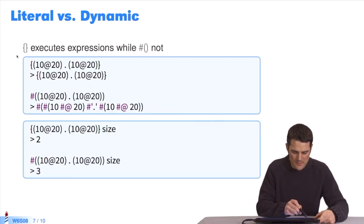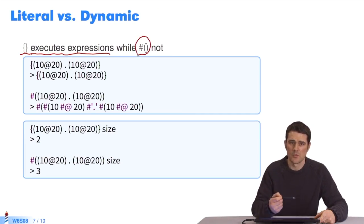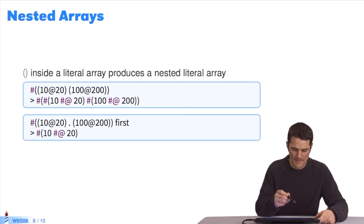So the important difference is right here. When I use braces, it executes expressions. However, when I use a hashtag parentheses to create a literal array, the literal expressions are not executed. Why not? Because it's the compiler that will create the array in the case of a literal array.